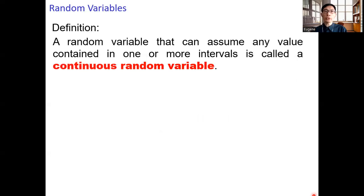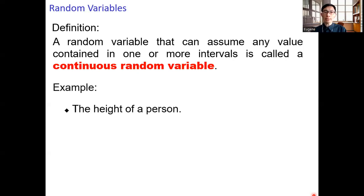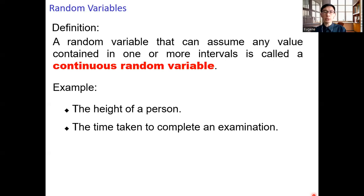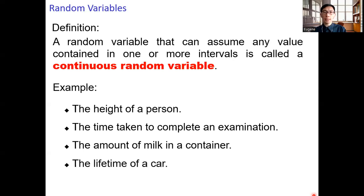Then we move on to another category — the continuous random variable. A random variable that can assume any value contained in one or more intervals is called a continuous random variable. For example: the height of a person, the time taken to complete an examination, the amount of milk in a container, and the lifetime of a car.